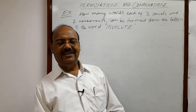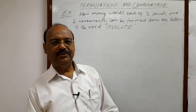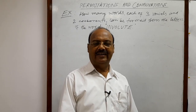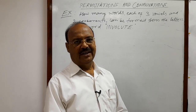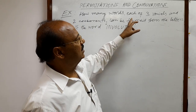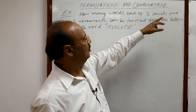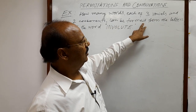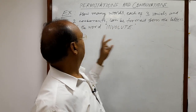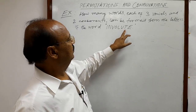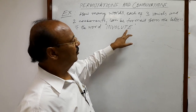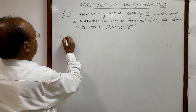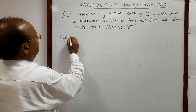Welcome students. In this video, we will see a question from the topic permutations and combinations. The question is: how many words, each consisting of three vowels and two consonants, can be formed from the letters of the word INVOLUTE? Let us see the solution. The question is very interesting and simple.